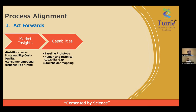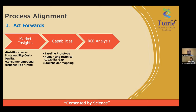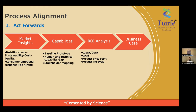Then you look at capabilities. We recommend having a baseline prototype, because once you have something you can see and feel, you can clearly identify the human and technical capability gaps in producing that product and understand which stakeholders you need at various stages. You then do a return on investment analysis, considering capex, opex, cost of goods, price point, and product life cycle to see if the financials add up. If they do, you put it in the business case and align it to your long-term business strategy before giving approval to proceed.